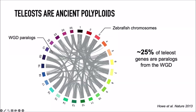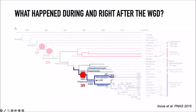Today about 25 percent of genes in teleost genomes are duplicated genes from the whole genome duplication — a large fraction. What we're interested in is what happened right after this whole genome duplication, because this is not well documented. The redundant genes make comparative genomics complicated: you're dealing with many duplicated genes, sometimes with different copies retained across species, making it challenging to understand what happened right after the duplication.